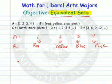How about set B and C? Are they equivalent? We can match red to Earth. Maybe you should match red to Pluto, and we'll match yellow to Mars.